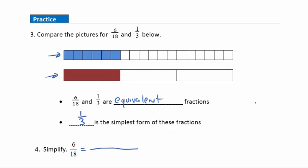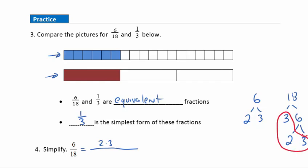I'll draw a big fraction bar and come off to the side with some scratch work. I'm going to factor 6 and 18. 6 factors into 2 times 3. For 18, I'm thinking 3 times 6 — 3 is prime, 6 is not, so we break that down to 2 times 3. So 18 factors into 3 times 2 times 3. We have a common factor of 2 — divide it out, leaving 1 each side. And a common factor of 3 in both numerator and denominator. In the numerator, 1 times 1 is 1; in the denominator, just 3. So I've simplified 6/18ths down to 1/3.